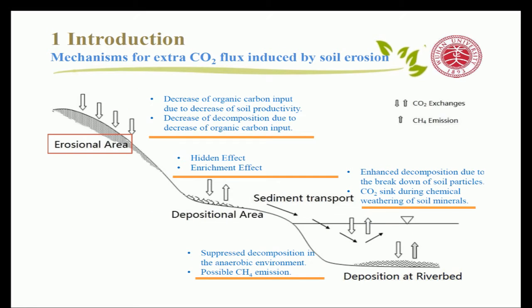To realize this target, we first need to understand the mechanisms by which extra CO2 flux is introduced by soil erosion. We can divide a small catchment into three parts: the erosional area, where soil particles are detached; the depositional area; and the transport area.